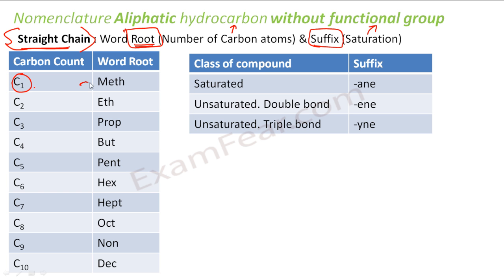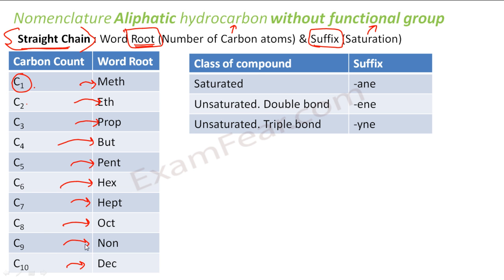Word root is the number of carbon atoms, and suffix indicates saturation — whether it is a single bond, double bond, or triple bond. If there is one carbon, we use 'meth'; two carbon, 'eth'; three, 'prop'; four, 'but'; five, 'pent'; six, 'hex'; seven, 'hept'; eight, 'oct'; nine, 'non'; ten, 'dec'. For saturation: if totally saturated, we use the suffix '-ane'; if it has a double bond, '-ene'; if triple bond, '-yne'.